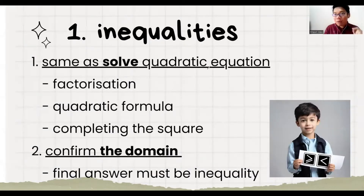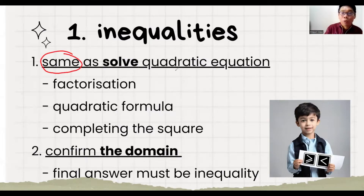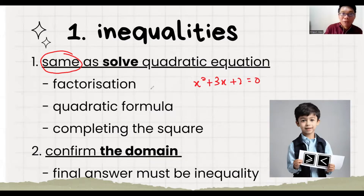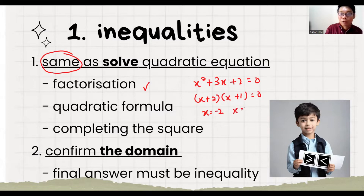The first part is how to solve quadratic inequalities. It's actually exactly the same as solving a quadratic equation. So let's say we have x-squared plus 3x plus 2 equals 0. We can use factorization: x plus 2, x plus 1 equals 0. So x equals minus 2, x equals minus 1. This is the first step we need to do.